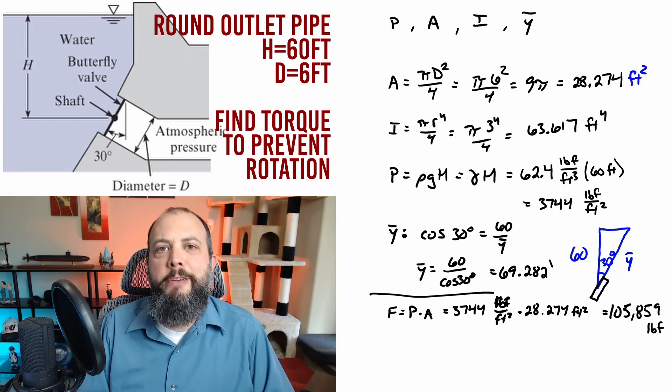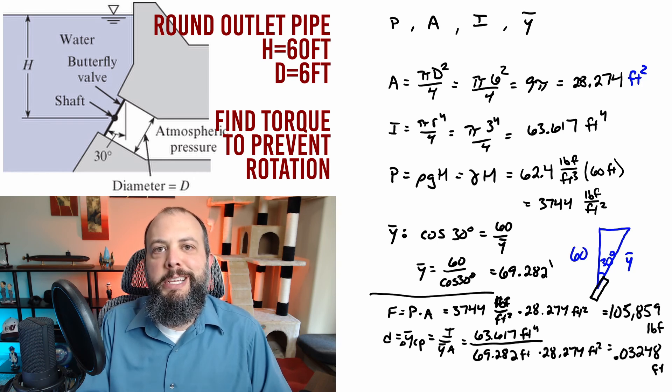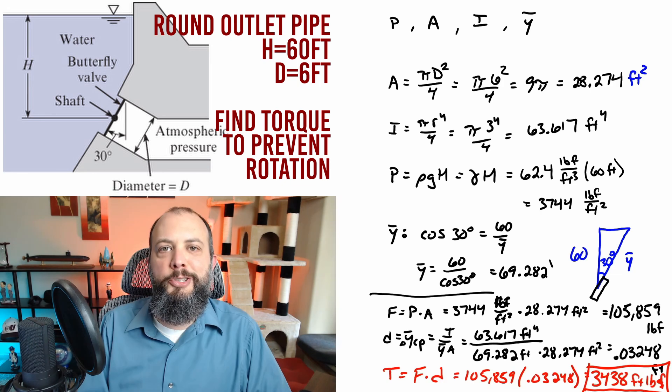Plugging in the pressure and area force comes out to be 105,000 pounds. Plugging in numbers to find the distance between the centroid and center of pressure, we get about 0.03 feet. And so the torque on this valve ends up being 3,438 foot pounds.